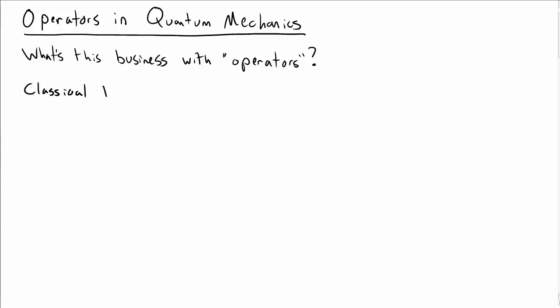Let's actually start with classical physics. In classical physics, we describe a particle by its position. Let's just work in one dimension, say x of t.